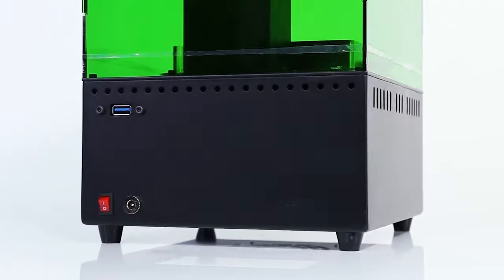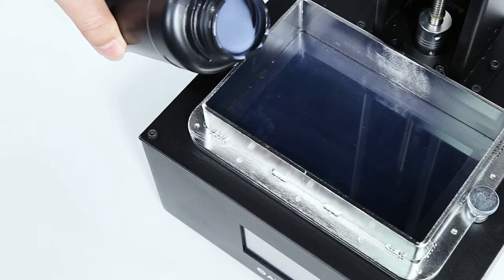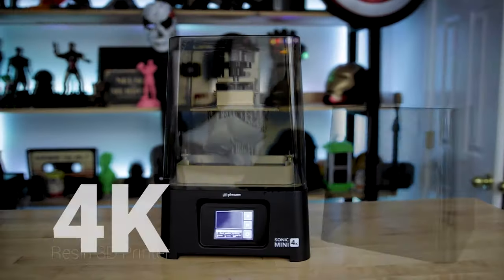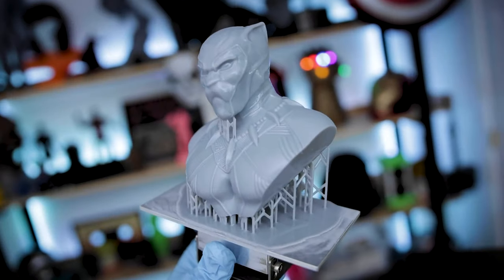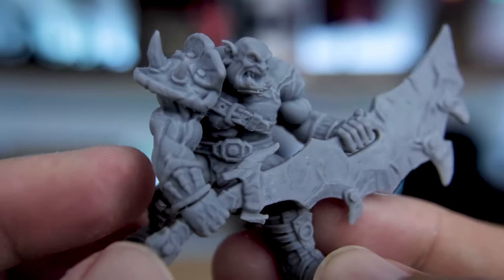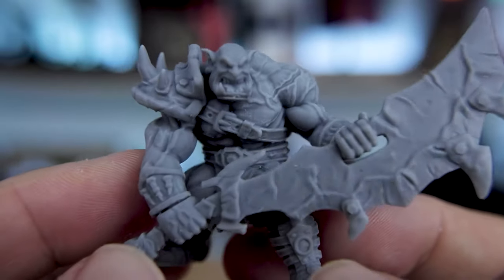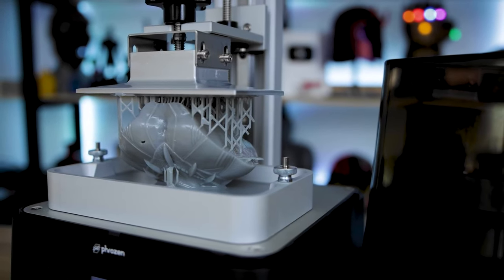However, initially the quality of models produced by these printers was not very good. But then in 2019, 3D printers with a 2K LCD matrix were introduced. These were followed later by those with 4K matrix. The 2K and 4K LCD 3D printers solved the problem of low quality prints.